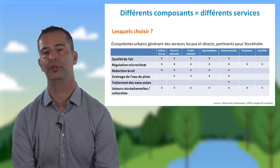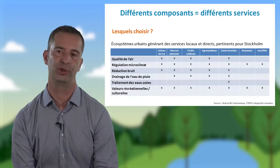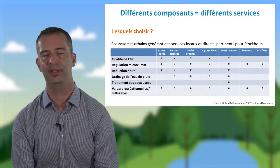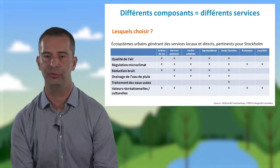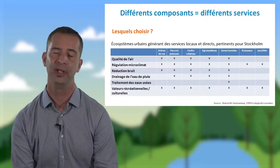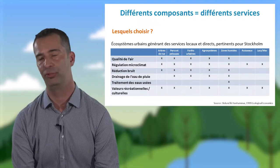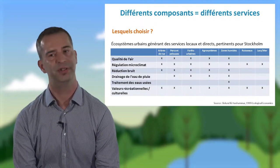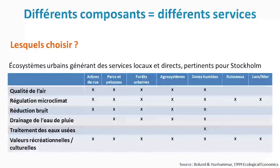Sur le premier point : différents composants donnent différents services. Voici un exemple sur les écosystèmes urbains. Des chercheurs ont regardé dans la ville de Stockholm, en Suède, différents écosystèmes — des arbres de rue, des forêts urbaines ou des zones humides — et quels services ils pouvaient rendre, comme la qualité de l'air, la réduction du bruit ou le drainage des eaux de pluie. Ces chercheurs ont montré que ces différents types d'écosystèmes ne fournissent pas les mêmes potentiels de services. On peut noter que les zones humides rendent beaucoup de services, ce qui est à mettre en lumière avec leur conservation, qui est une priorité européenne.